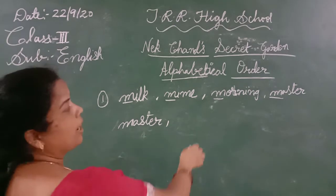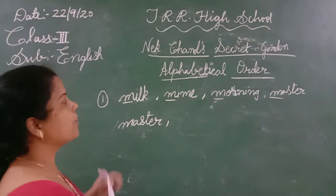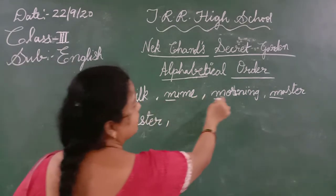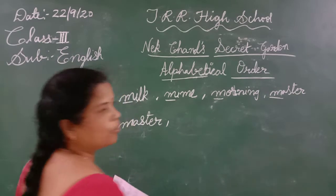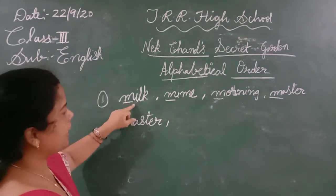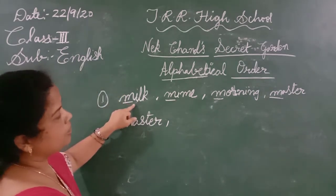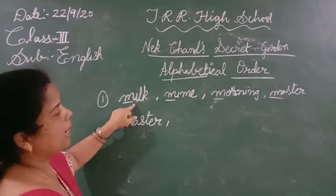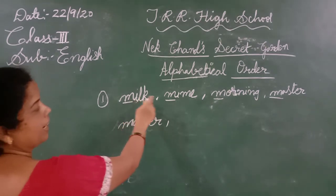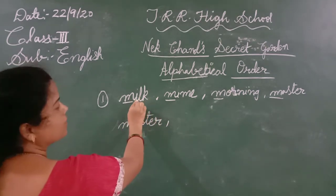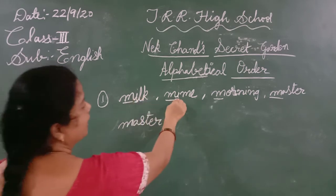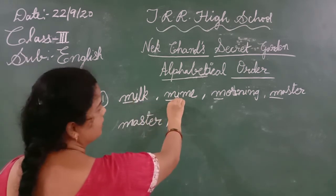The second one — after A comes B, but there is no word with second letter B. Going through the alphabet, next is I. And now see here: two words have second letter I — milk and mine both have I. So we have to move on to the third letter.